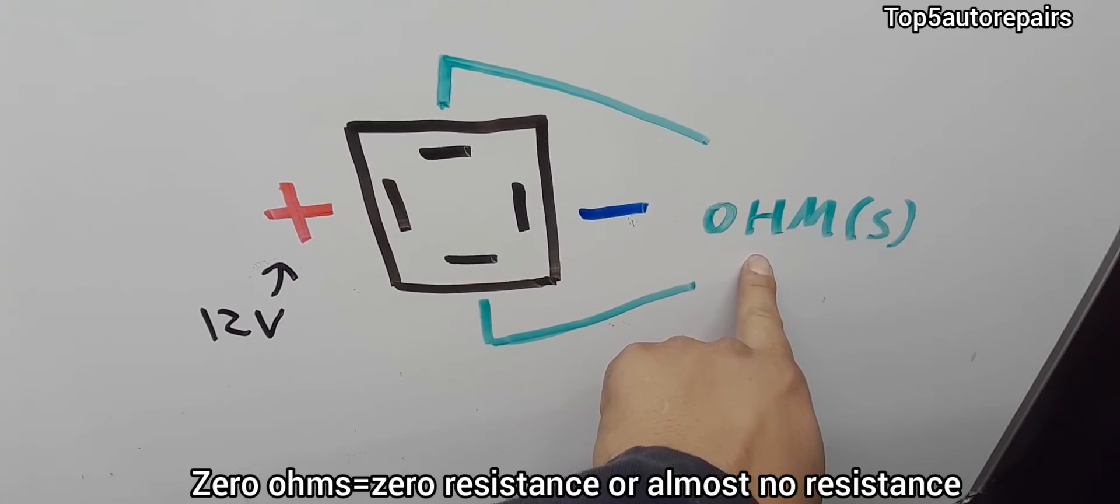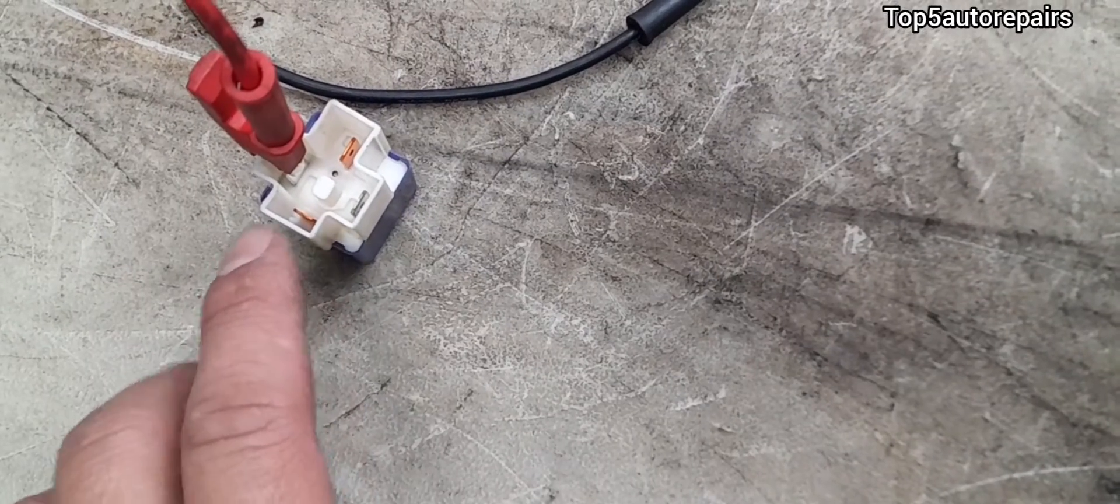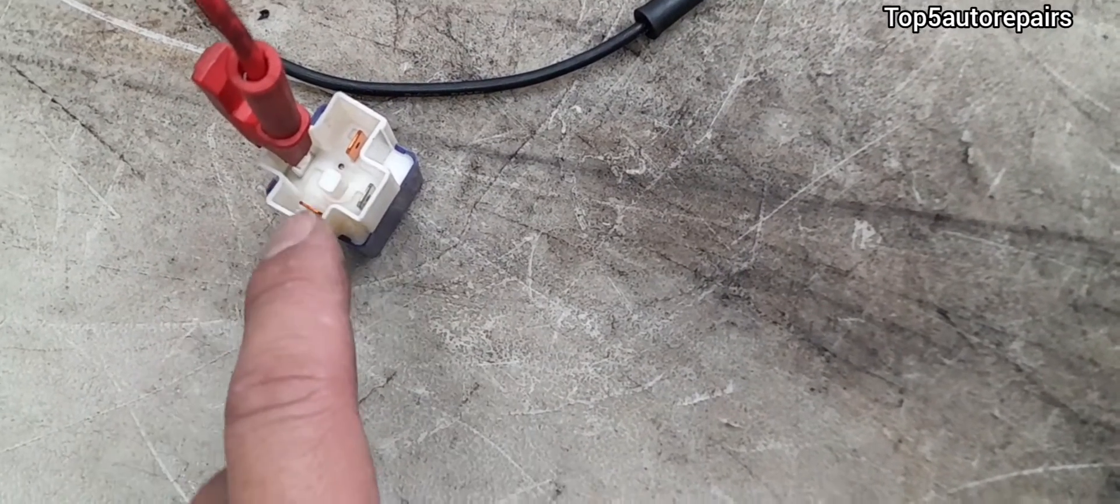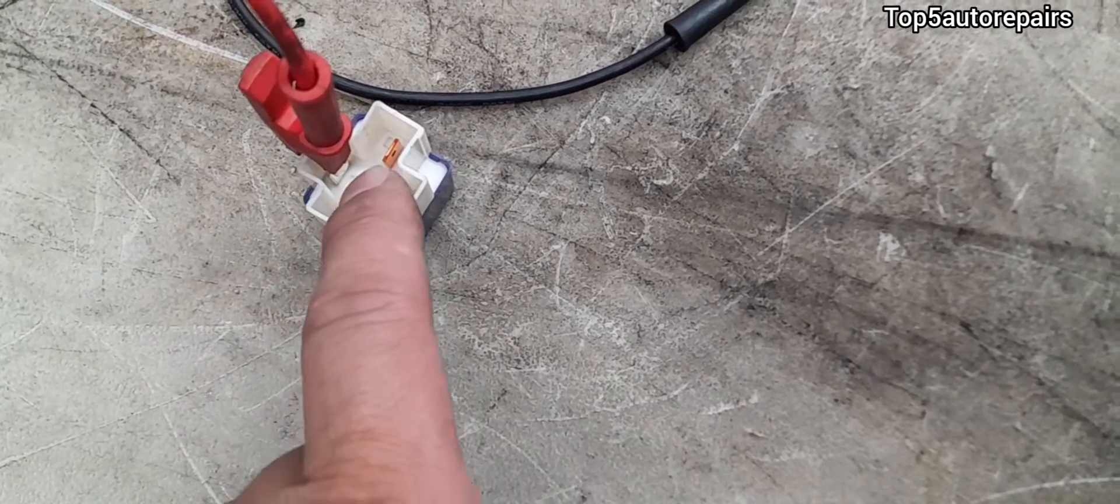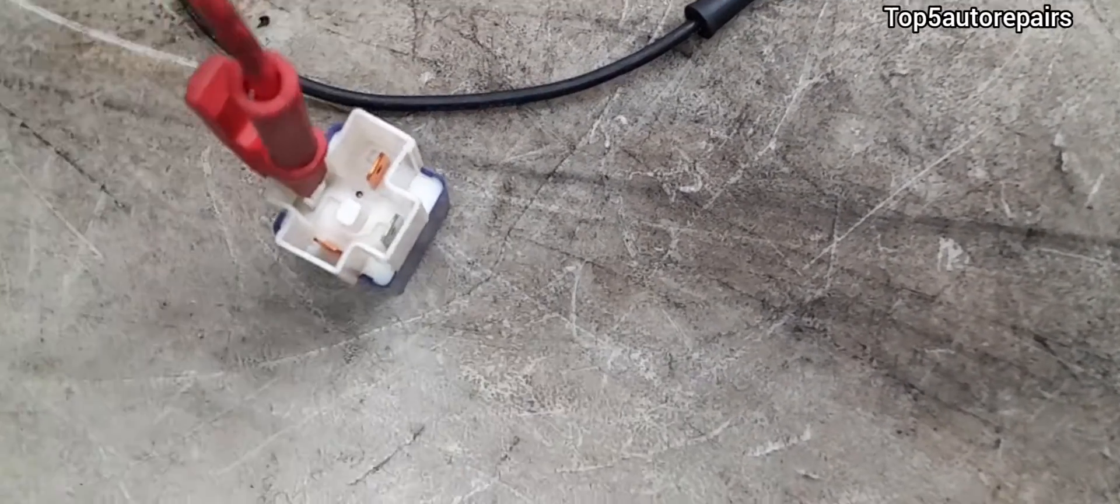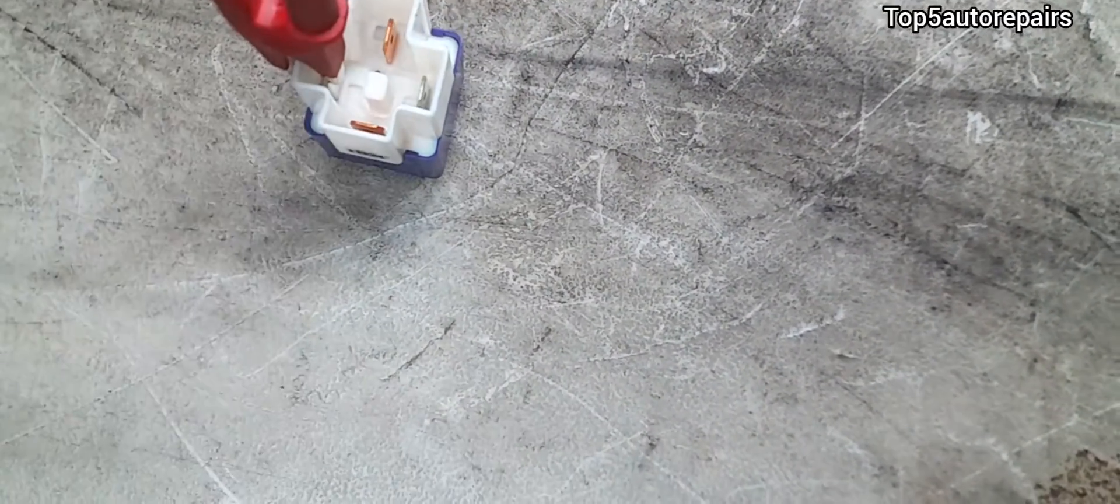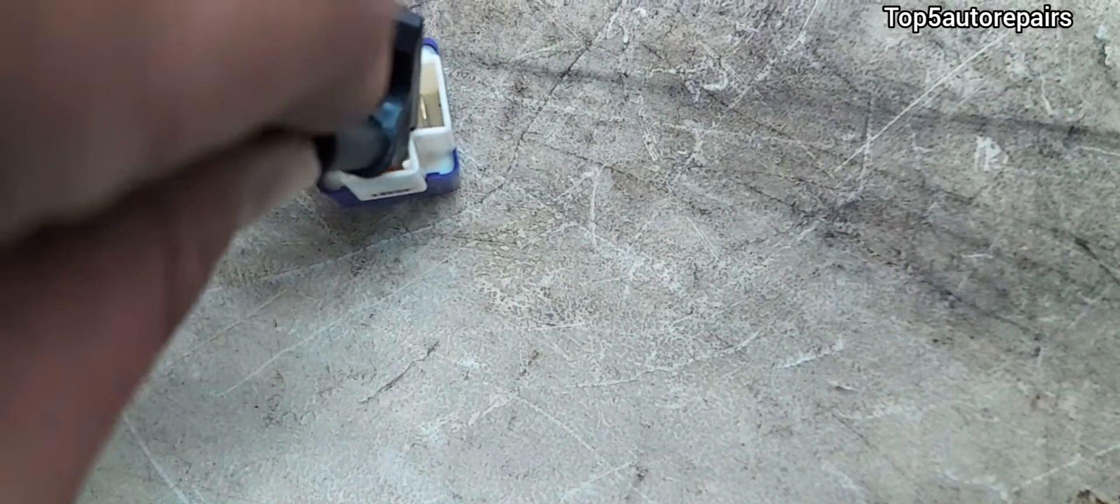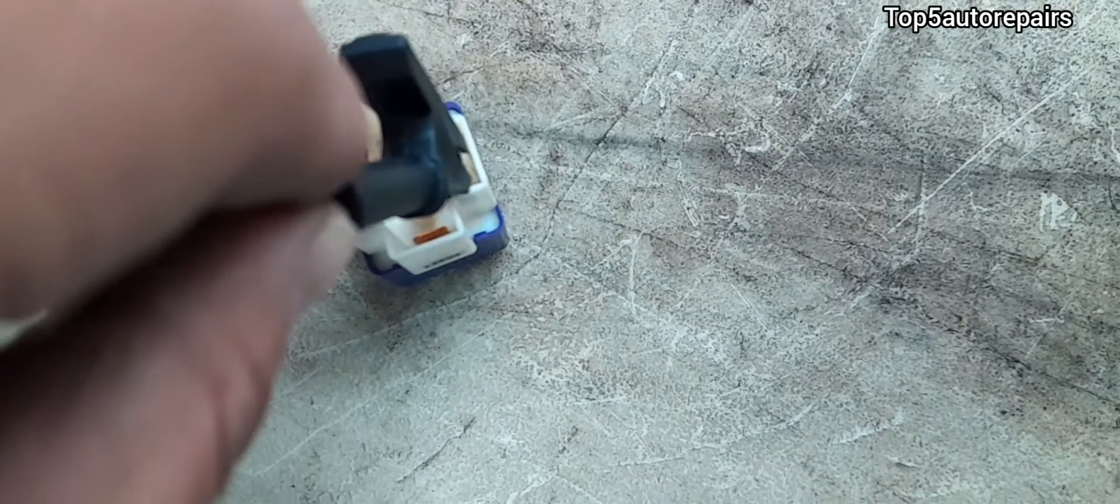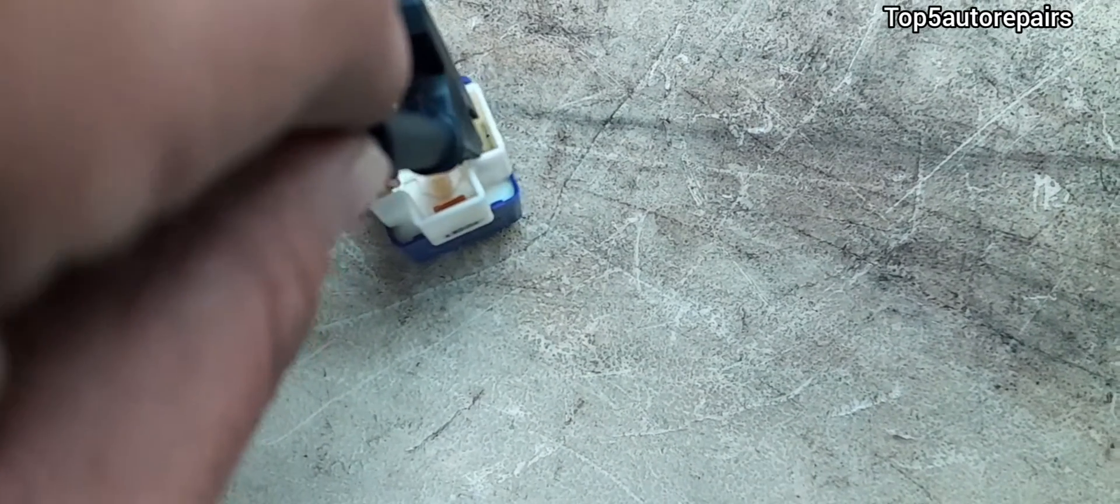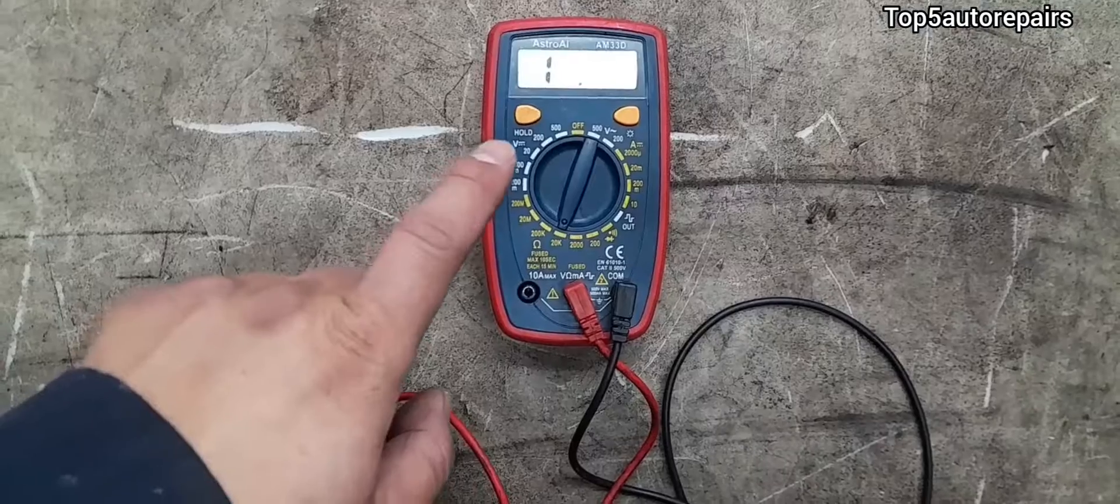If the starter relay is not clearly marked and you can't see it anymore because it's faded, this is how you test the starter relay. First, apply a 12 volt source to any of the pins. Next, take your other side and randomly touch any pin until you hear a clicking noise. When you hear a clicking noise, that means the coil is energized. Now you can test for resistance.